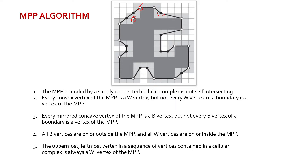We can see that here this is a black vertex and is a vertex of MPP, but here this is a black vertex and it is not the vertex of the MPP. All B vertices are on or outside the MPP, and all W vertices are on or inside the MPP. We can see that this is a white vertex and it is on the MPP; this is a white vertex but it is inside the MPP. In this illustration, we are not provided with a black vertex which is outside the MPP. The uppermost leftmost vertex in a sequence of vertices contained in a cellular complex is always a W vertex of the MPP — that is, it should always be a convex vertex.